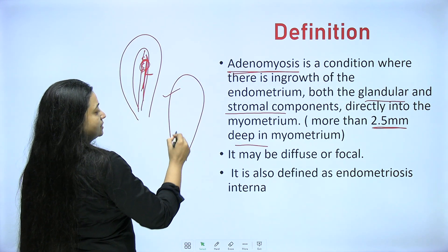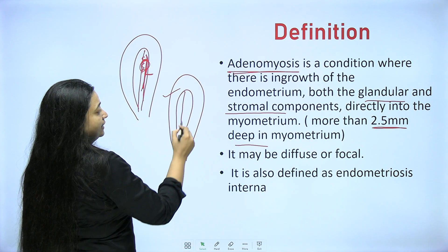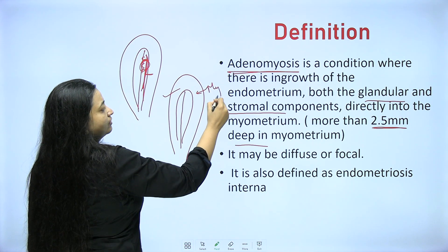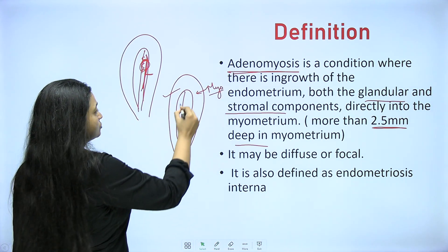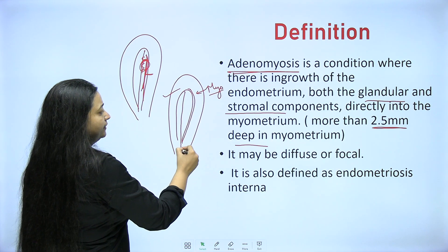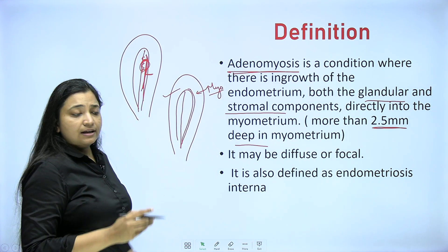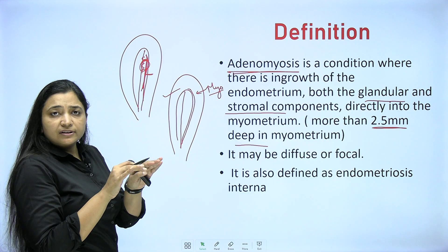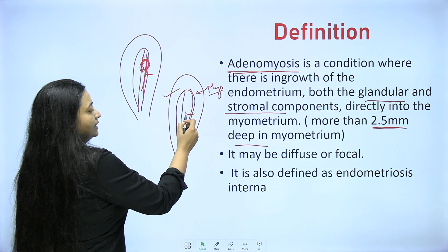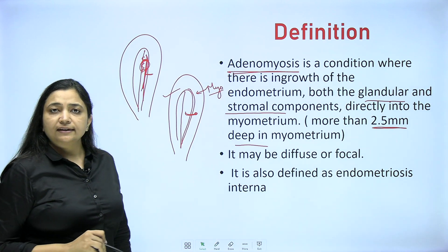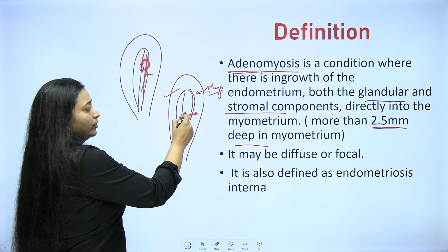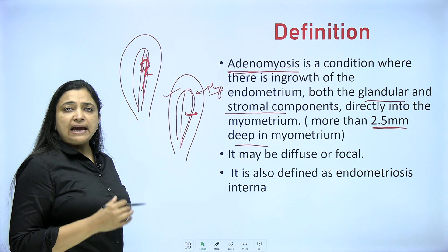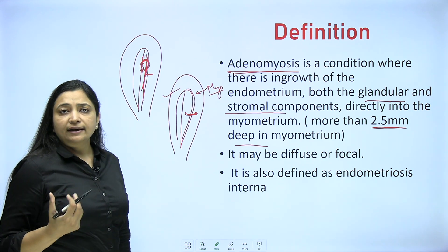See, this is the uterus and this is the endometrium. As I mentioned, there are two zones in the endometrium. Similarly, the myometrium is also divided into zones. The zone here — this endometrio-myometrial interface — is the zone connecting the myometrium and the endometrium. If there is some problem with that zone, the endometrium will go inside and get buried, embedded inside the myometrium. If these deposits go more than 2.5 mm inside the myometrium, they sit there and respond to the hormones, and the condition becomes adenomyosis.